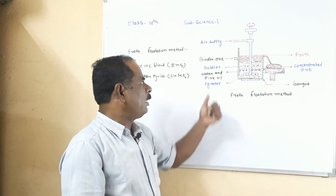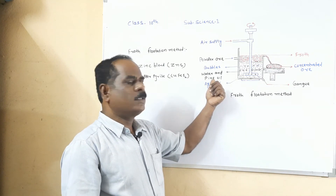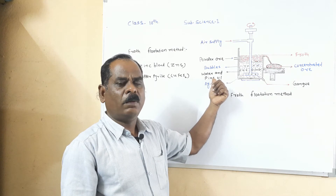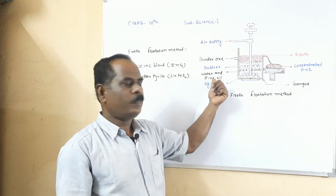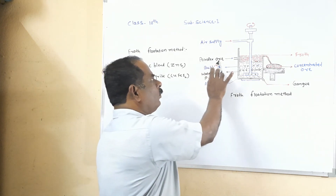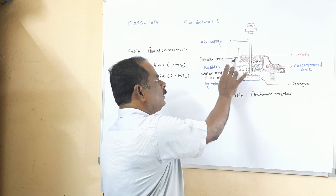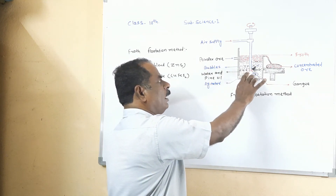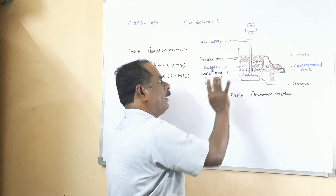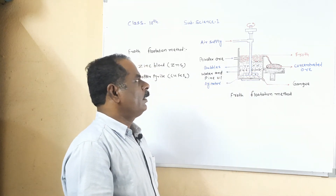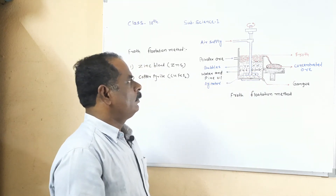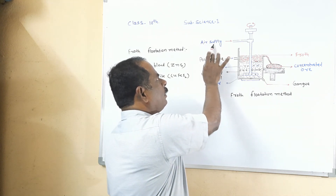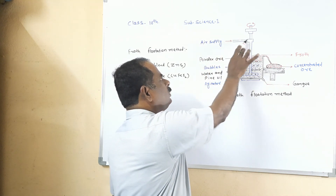Generally, pine oil is used because sulphide ores are wetted by pine oil. Add the powdered ore through the inlet into the tank, which contains a large quantity of water and pine oil. Then pass high-pressure air through the agitators.